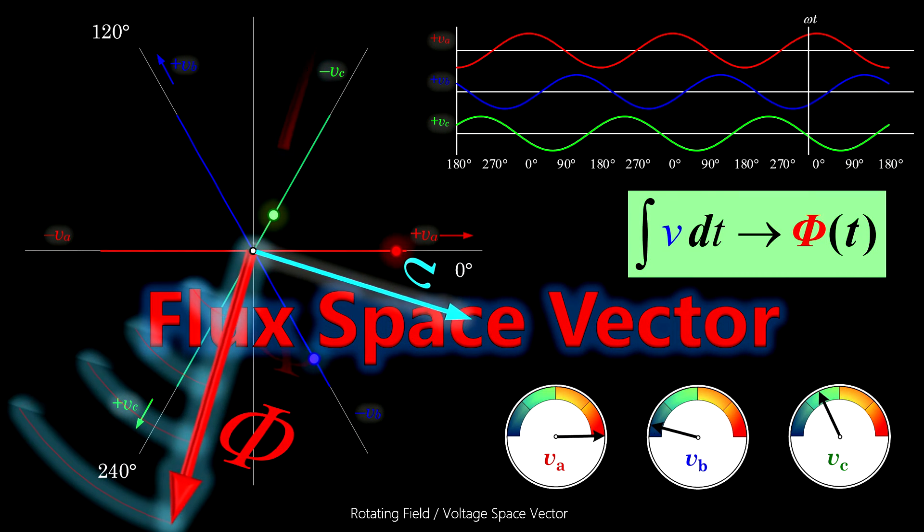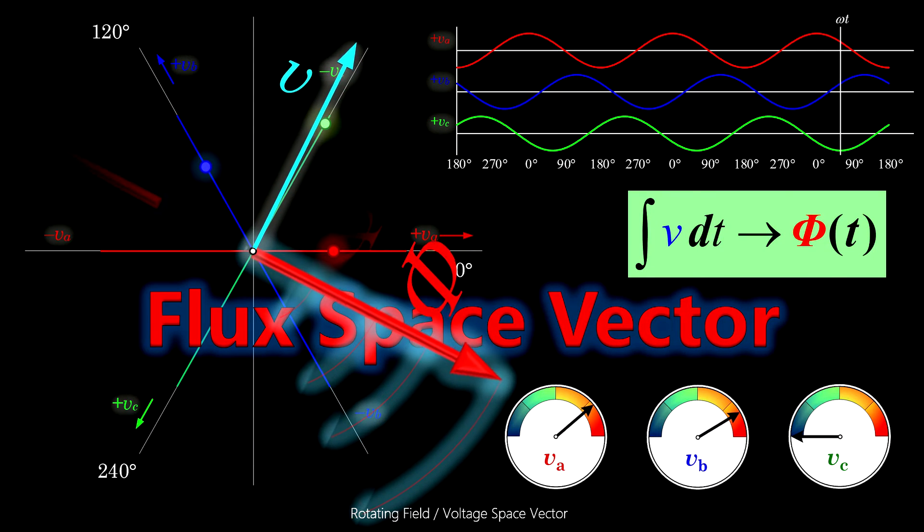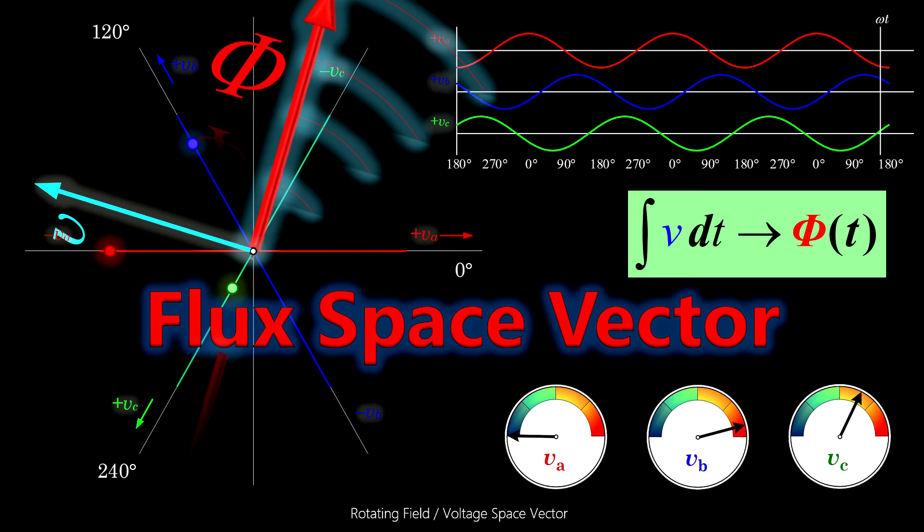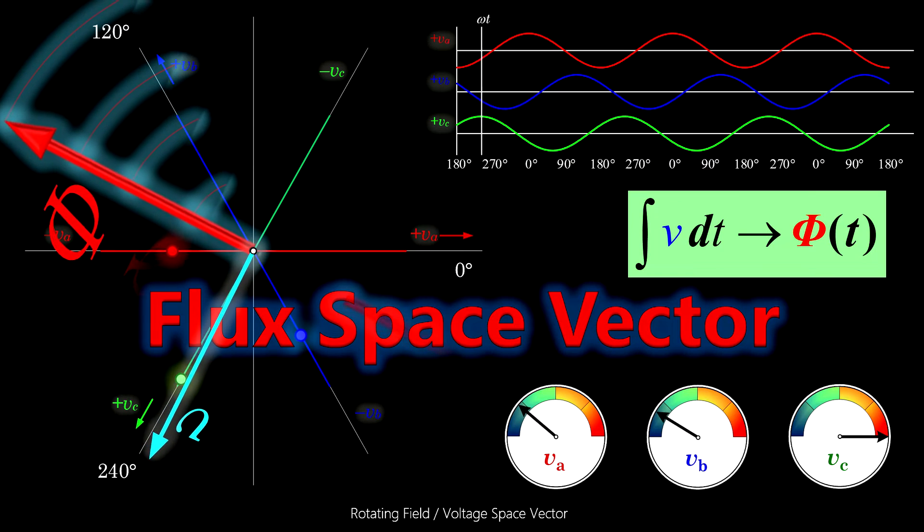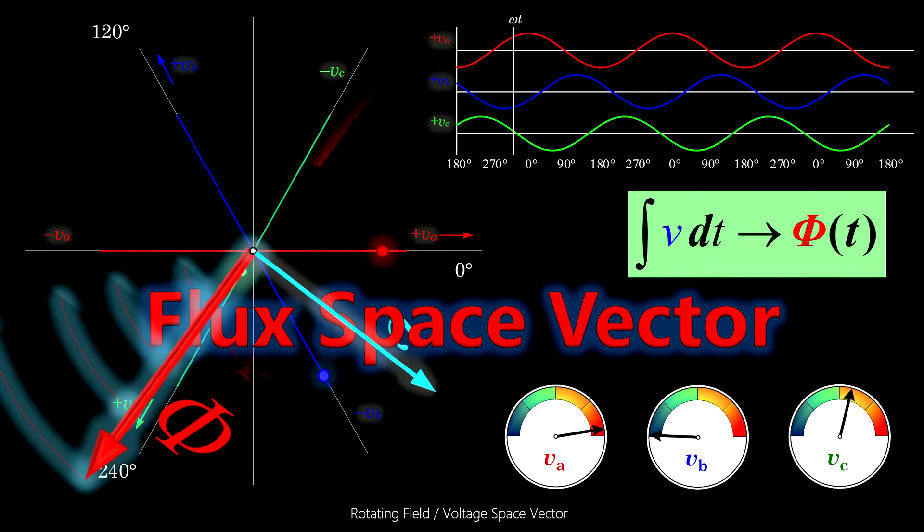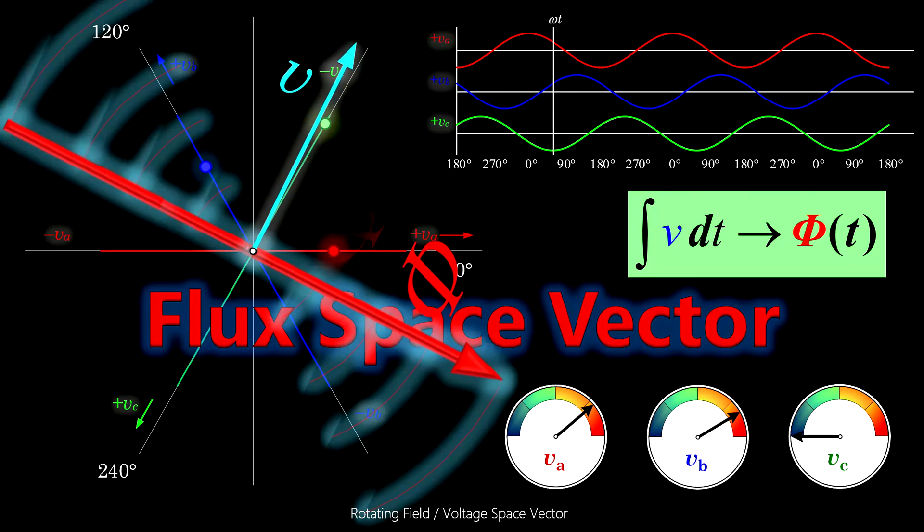Finally, we have to understand that the flux vector does not start somewhere in the middle of the machine. Flux lines are closed loops and run through the entire machine. And the interesting part of the flux is, of course, the part between the coils that creates the shown finite flux vector.